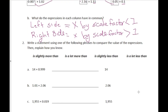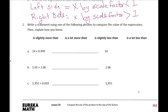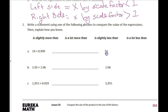The next problem says to write a statement comparing the value of these expressions and explain how you know. We have fourteen times something that is one thousandth shy of one — so it's going to get slightly less than as big as it was. Fourteen times that is going to be slightly less than fourteen.